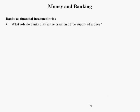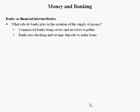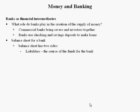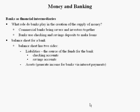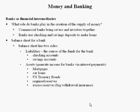Now, what role do banks play in the creation of the money supply? Money supply is a function of bank activity and the Federal Reserve, which is the United States' central bank. Commercial banks bring savers and investors together. Banks use checking accounts and savings deposits to make loans. The balance sheet for a bank has two sides: liabilities — the source of funds, including checking and savings accounts — and assets, which generate income through interest payments, including mortgages, car loans, U.S. Treasury bonds, required reserves, and excess reserves.